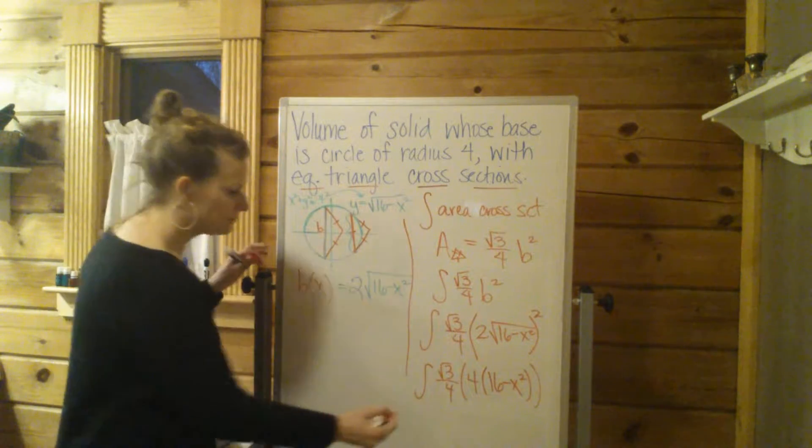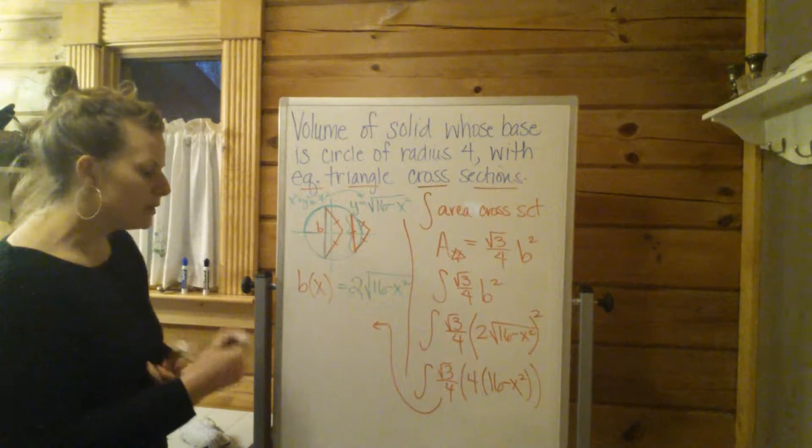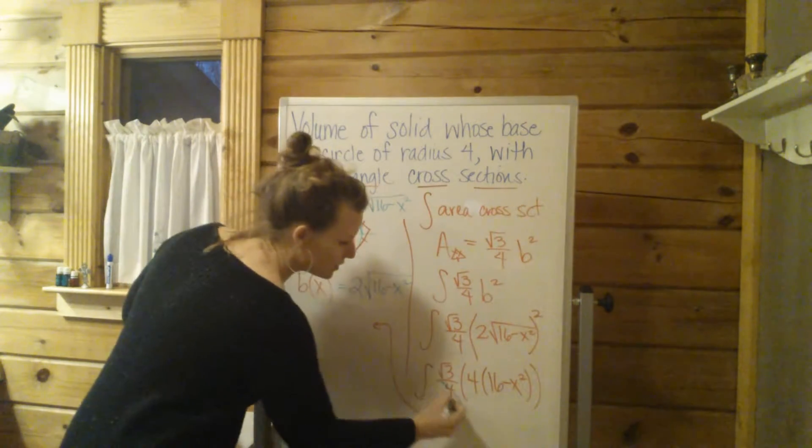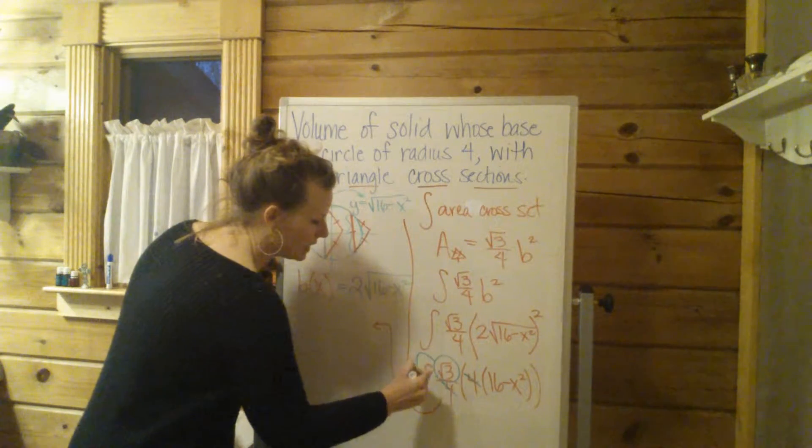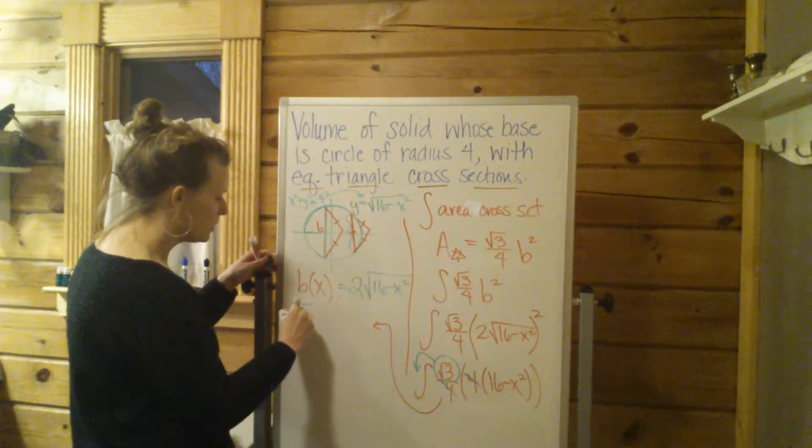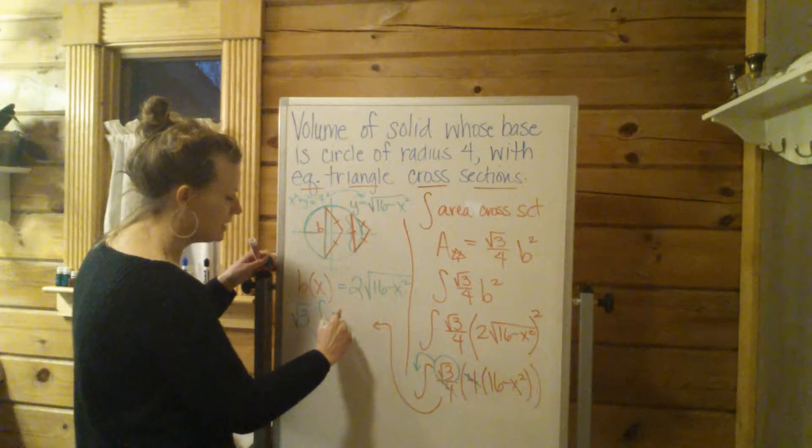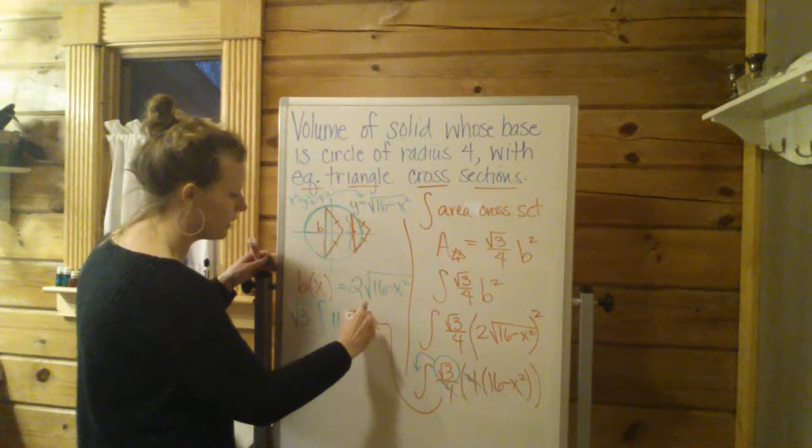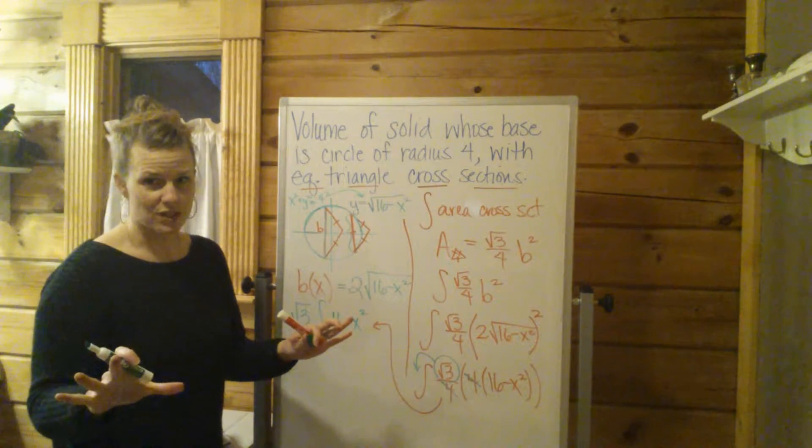And then, I might come over this way here. Now we can simplify a little bit. These 4s are going to cancel. Then this constant, the square root of 3, can come out in front of the integral. So I got the square root of 3 integral. Then I just have 16 minus x squared after the integration symbol. So far, so good.